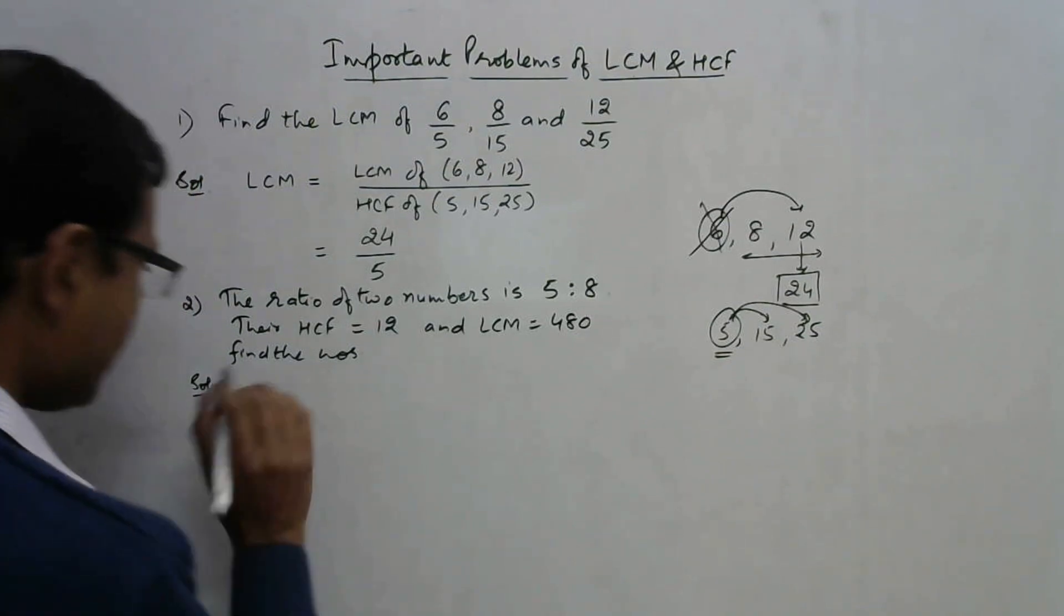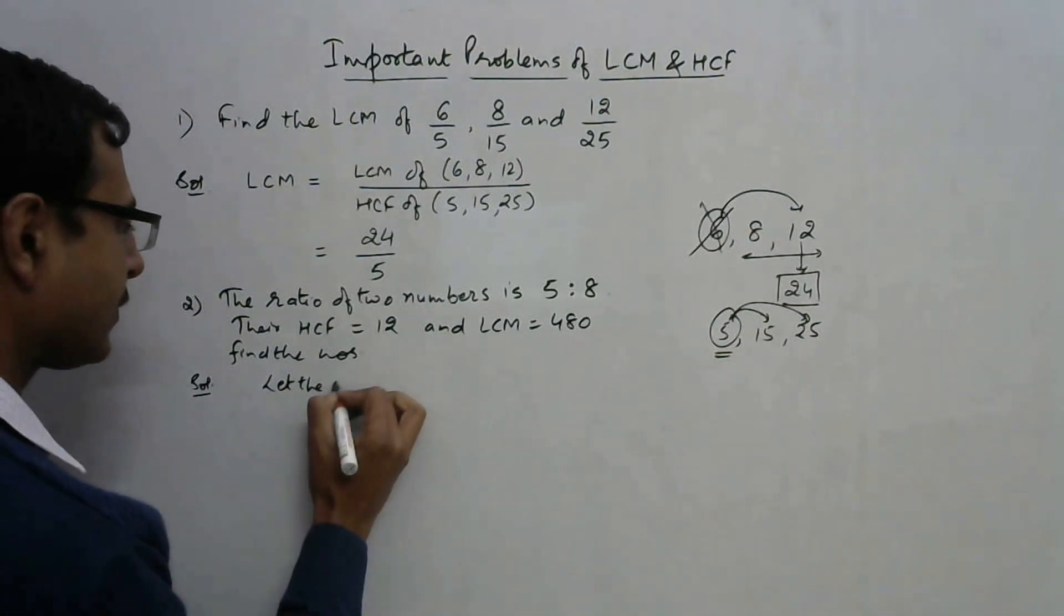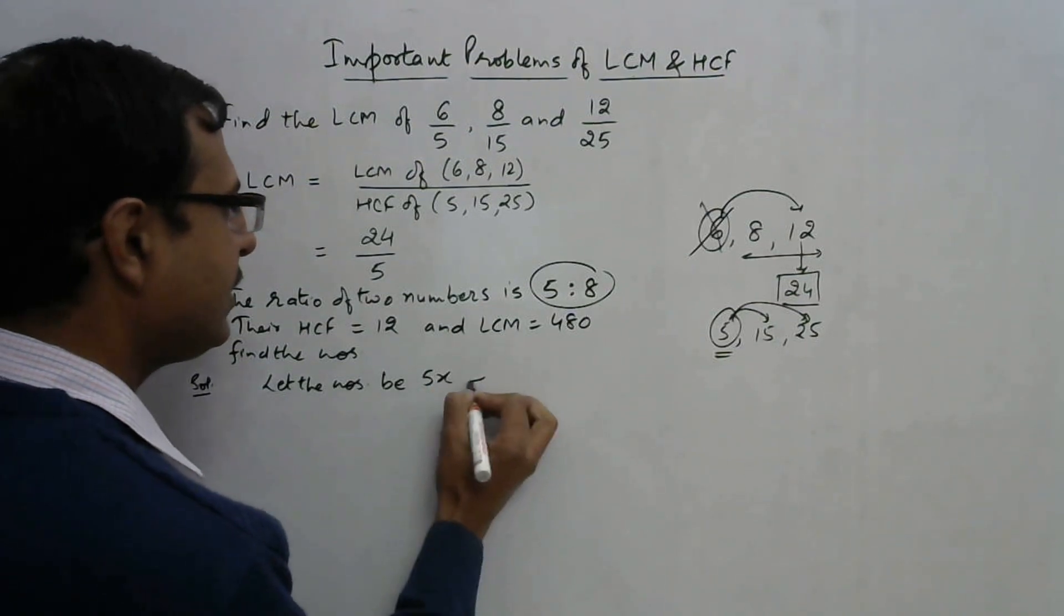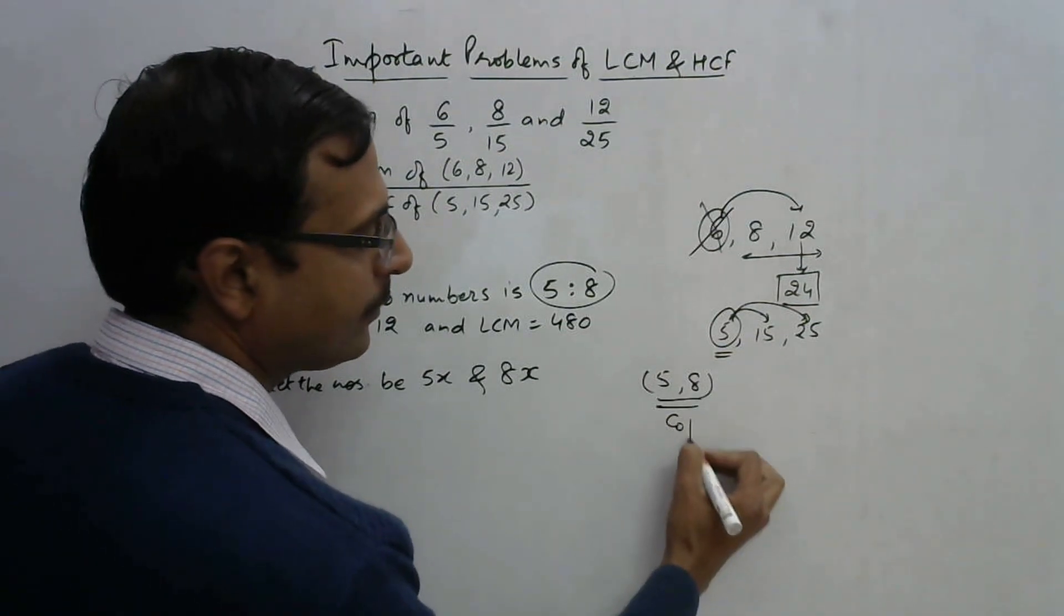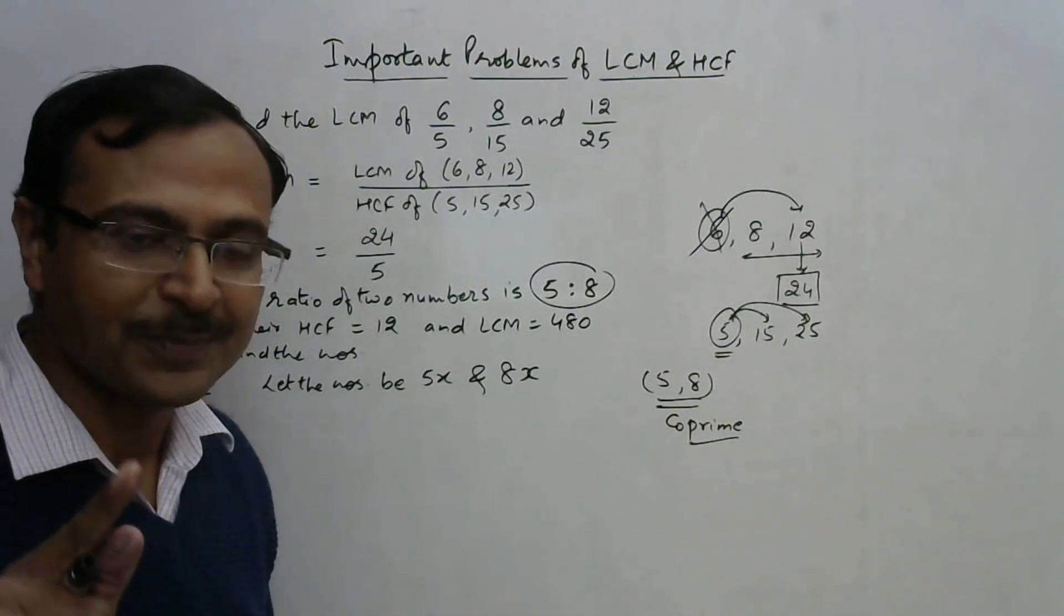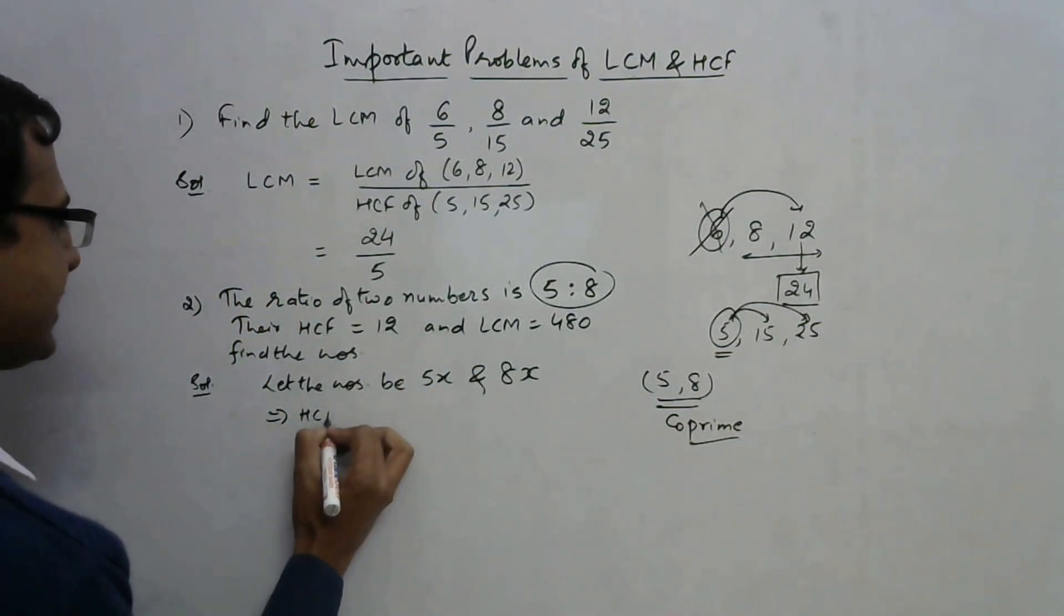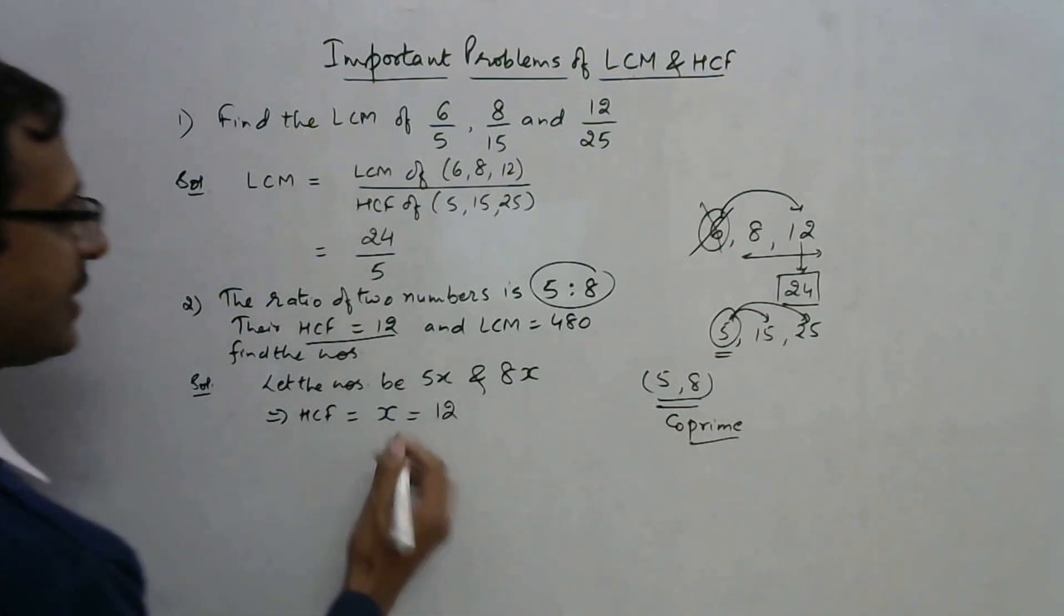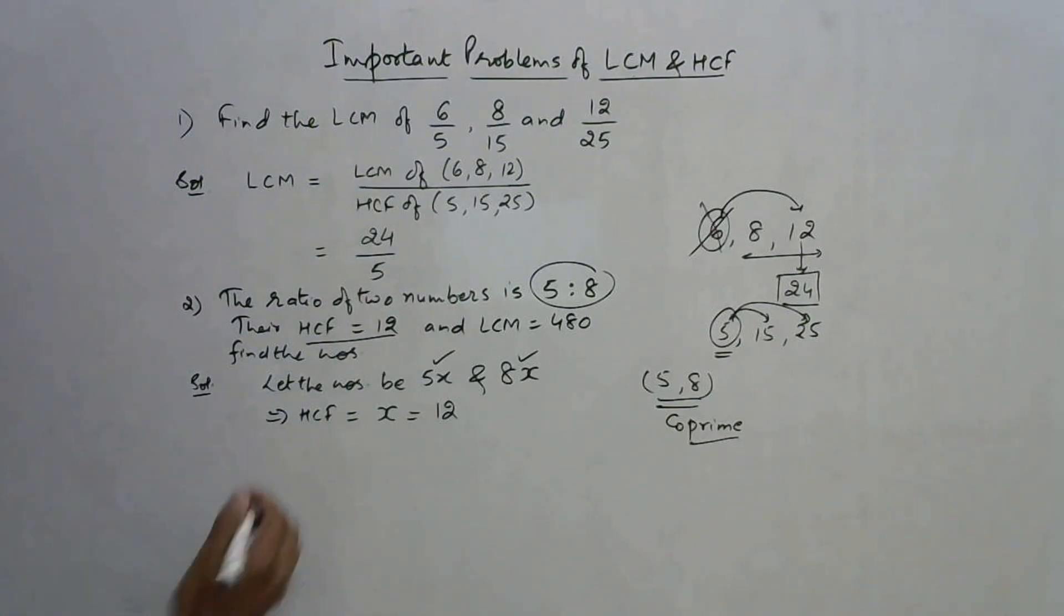If you assume the numbers are 5x and 8x, since 5 and 8 are coprime, they don't have a common factor. So the common factor of 5x and 8x is only x. The highest common factor is x, and x is already given in the question, so the value of x is 12.